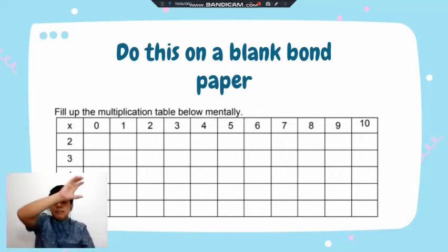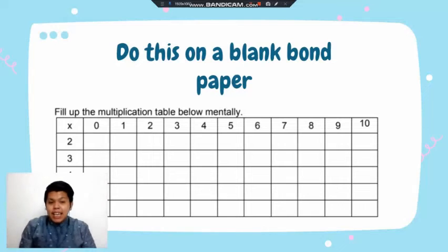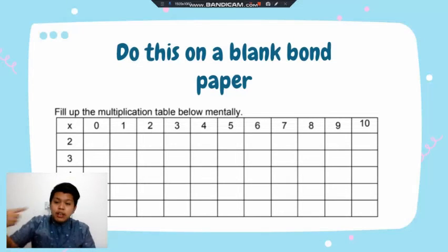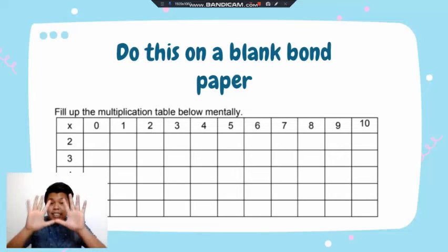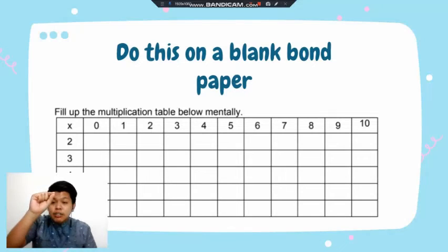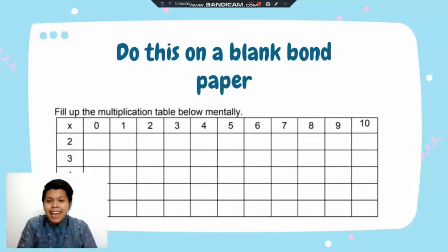Put the multiplication symbol on top. Then across the top write: 0, 1, 2, 3, 4, 5, 6, 7, 8, 9, 10. Going down the column rows write: 2, 3, 4, 5, and 10. Now solve: 2 times 0 is 0, 2 times 1 is 2, and so on. Fill that all up and you are done.